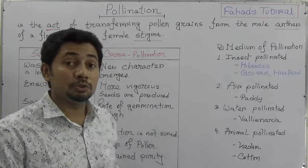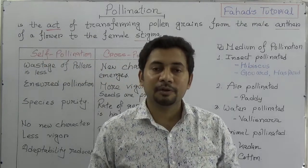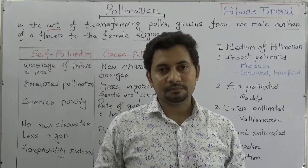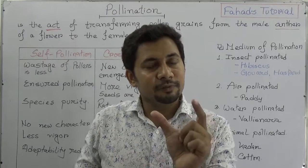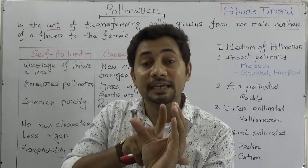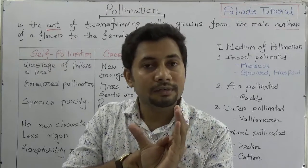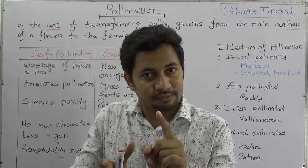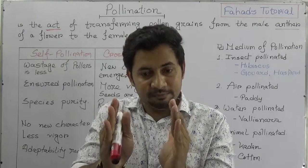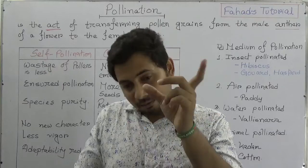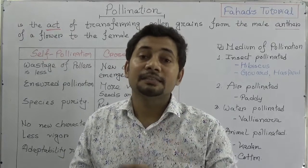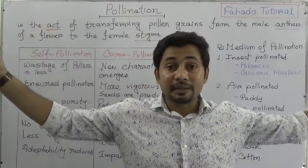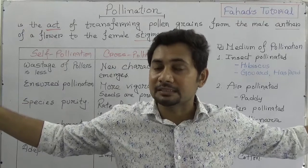Simply, pollination is of two types: number one, self-pollination, and number two, cross-pollination. Self-pollination takes place in the same flower or in the same plant between two different flowers. Cross-pollination takes place between two different plants of the same species.